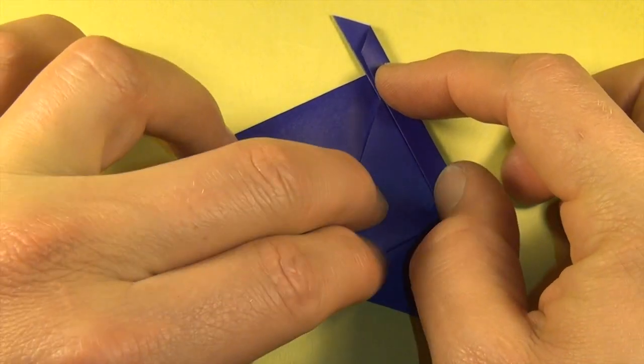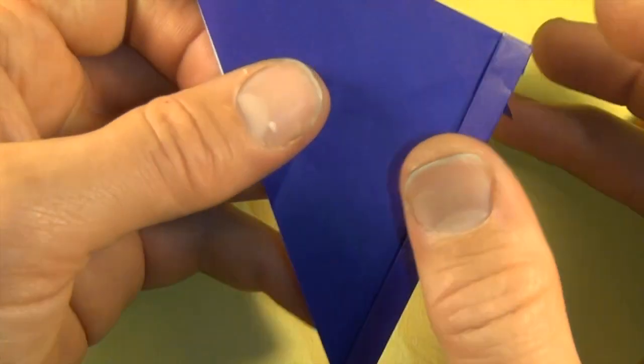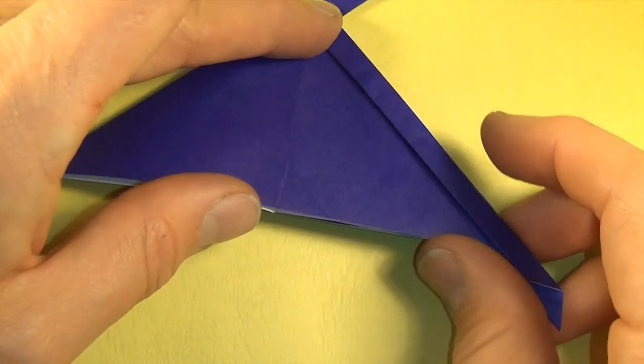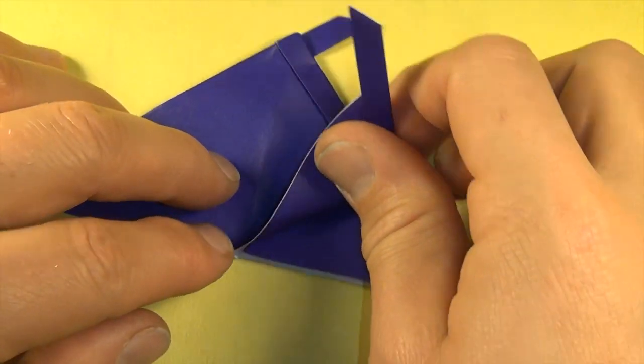Put this flap up and turn it over and do the same thing with this flap. So this edge goes right to the crease.